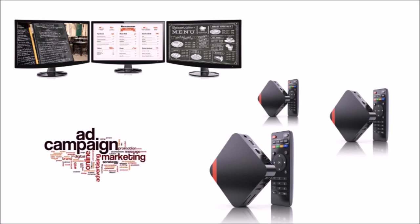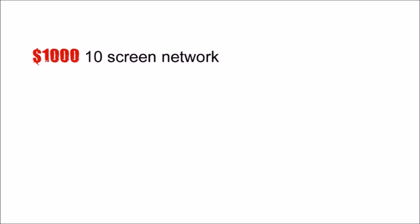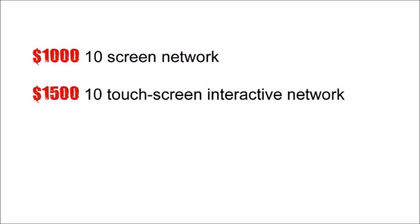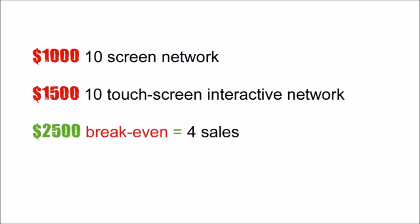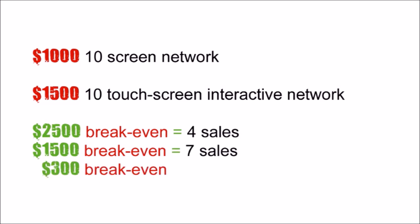Read a little on digital signage advertising as an industry, just to understand it a bit better. It would cost about $1,000 per location for hardware and software to start a 10-screen network, and about $1,500 to set up a 10-touchscreen interactive kiosk network. If you charge $2,500 to advertise in all 10 locations, you would break even on your entire network with only 4 sales. Even at a more affordable $1,500, you will only need 7 sales to break even.